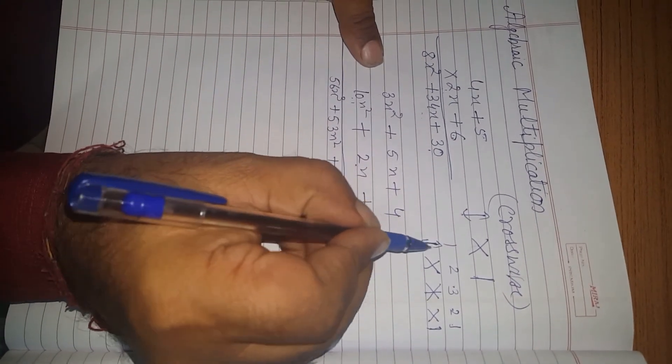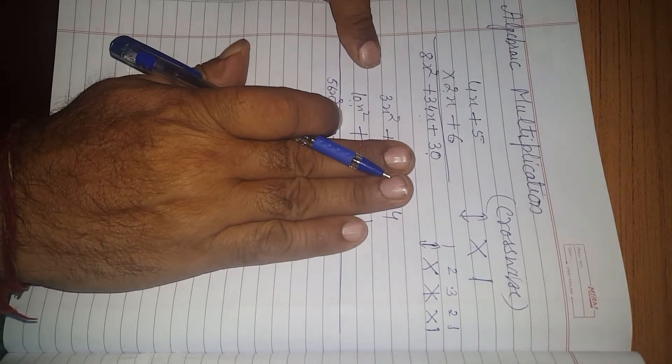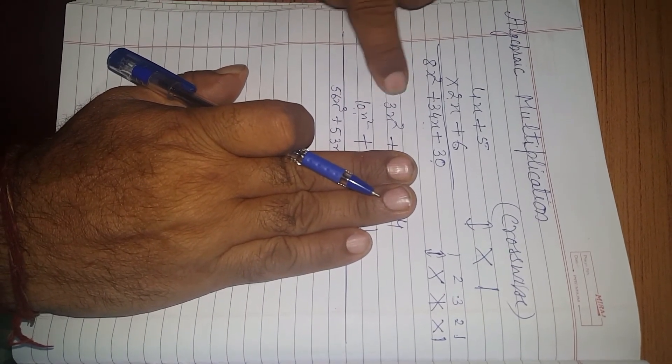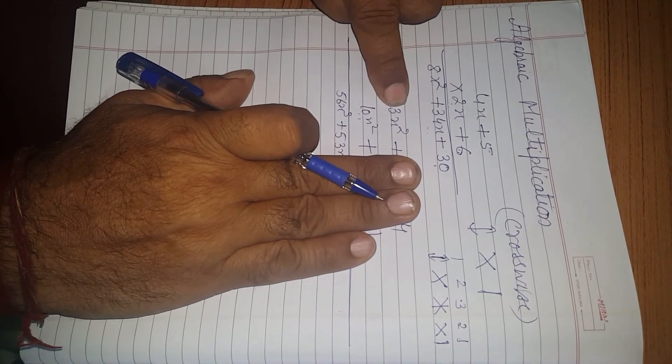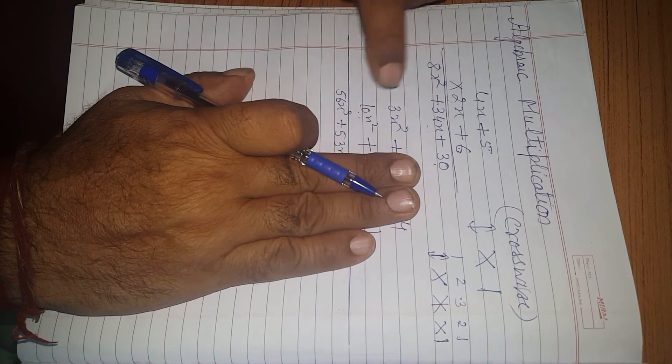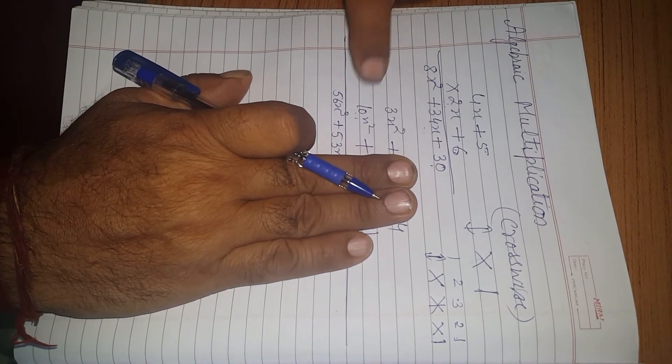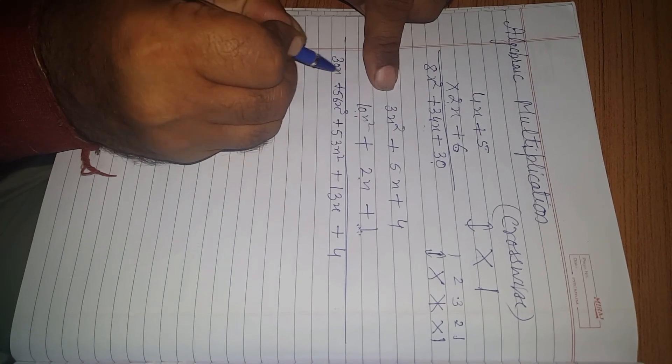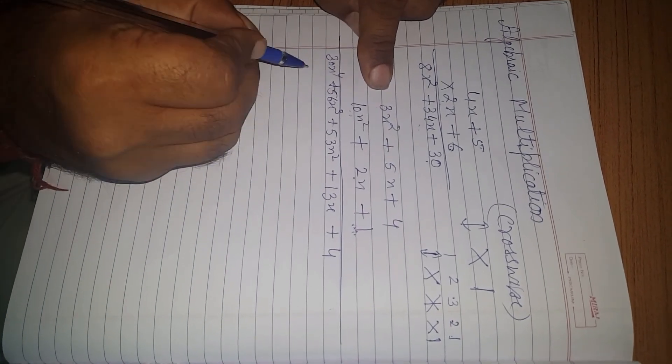Now, next step is again vertical multiplication. We will cover the last two terms and multiply vertically. We will get 10x square into 3x square. So, we will get 30x to the power 4.